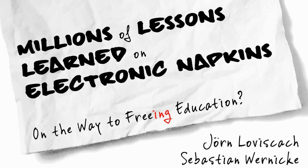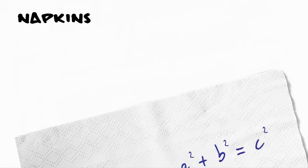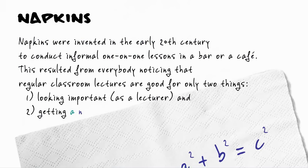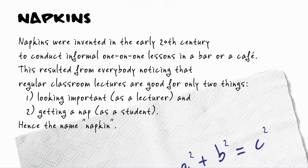Thanks a lot. Millions of lessons learned on electronic napkins on the way to freeing education. As academics, we have to start with a definition. We look that up in the Encyclopedia Galactica. Napkins were invented in the early 20th century to conduct informal one-on-one lessons in a bar or a cafe. This resulted from everybody noticing that regular classroom lectures are good for only two things: looking important as a lecturer, and getting a nap as a student — hence the name Napkin.